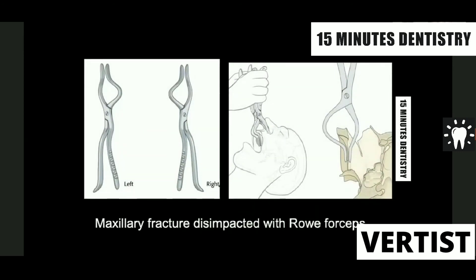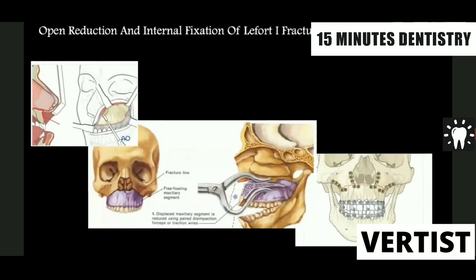The Rowe disimpaction forceps are used when the maxilla is displaced backwards. You should stand at the back of the patient — not the front — when pulling the maxilla, because standing in front puts all pressure forward and you may end up with the maxilla in your hand. Standing behind the patient, place the forceps in the nose and palate and gradually move it upwards to disimpact the maxilla.